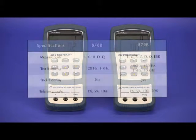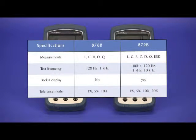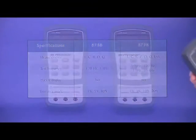The differences between the two meters can be seen here in this table. Not directly shown is that the 879B is able to measure a wider range of component values.